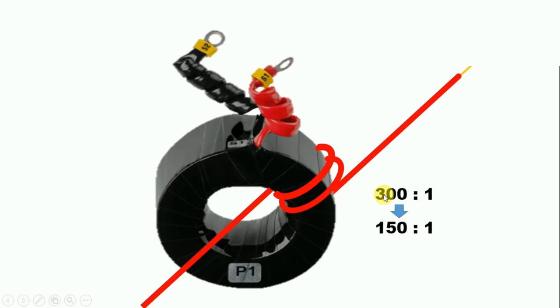When we made a single turn, the ratio was 150 by 1. Now with one more turn added, the ratio becomes half of this, that is, it becomes 75 by 1.